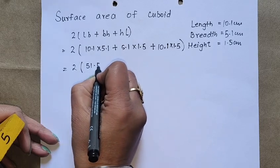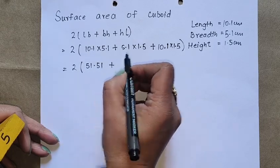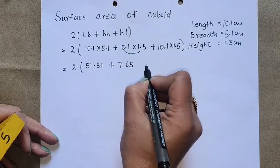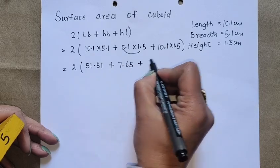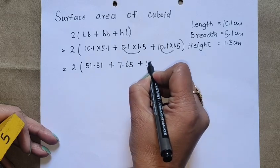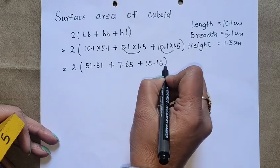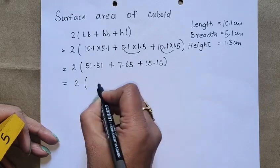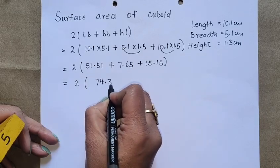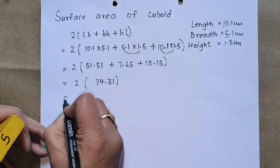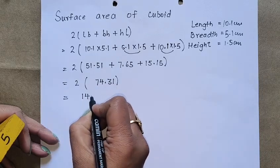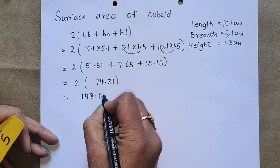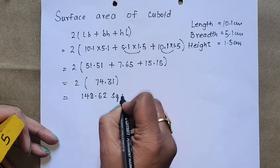We get 51.51 plus 7.65 plus 15.15. When we add all the values in the bracket, this will give us 74.31. On multiplying by 2, we'll get 148.62 square centimeters as the surface area.